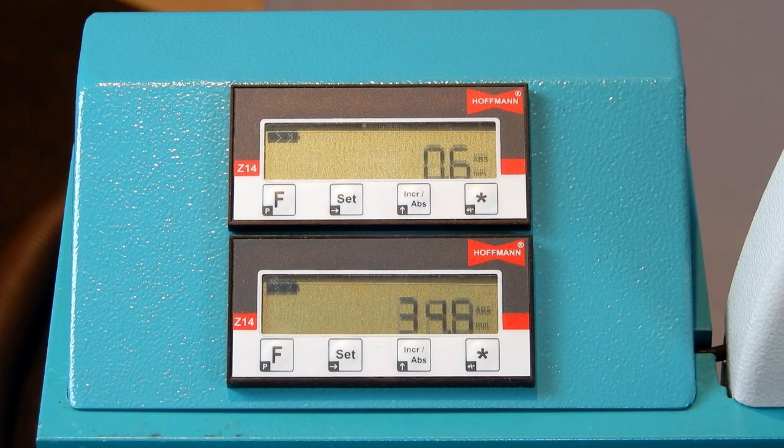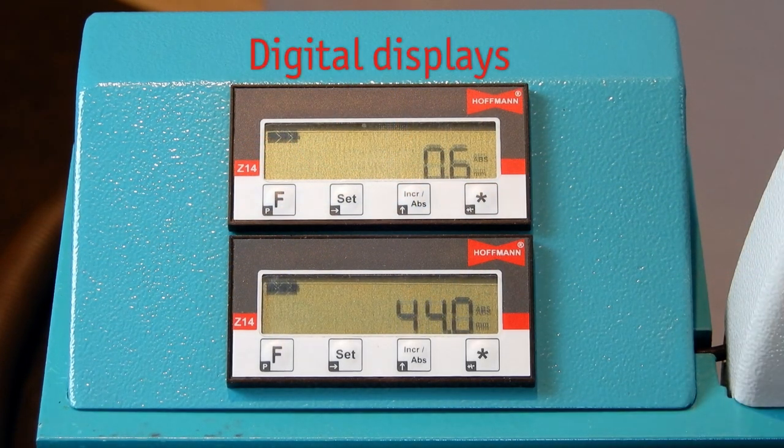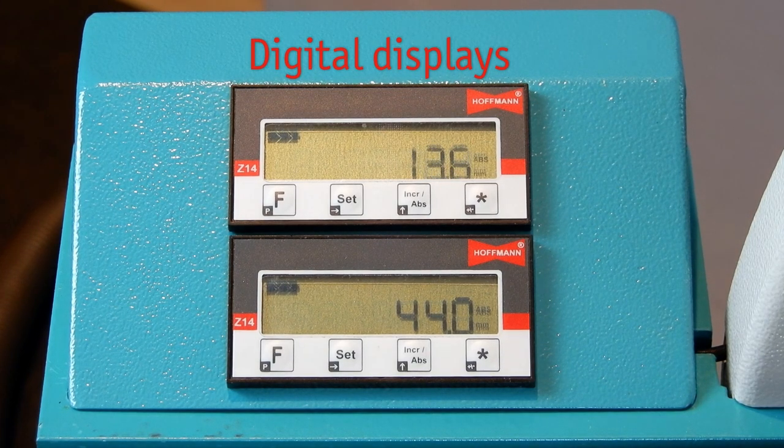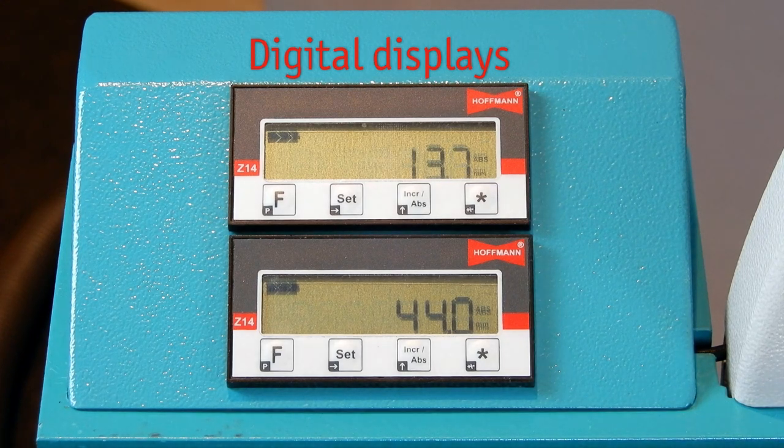The two digital displays show the precision of the keyway in reference to the corner and the routing height with an accuracy of one-tenth of a millimeter.